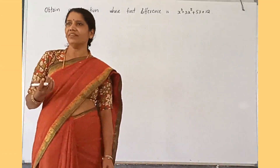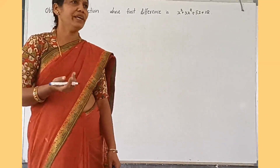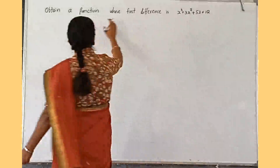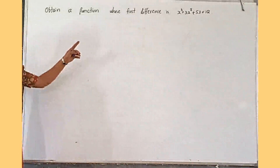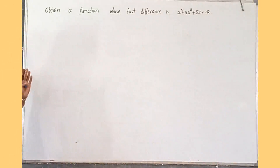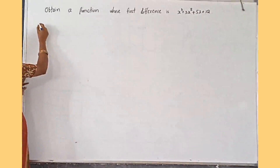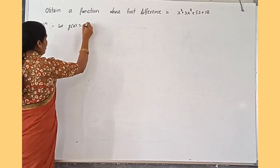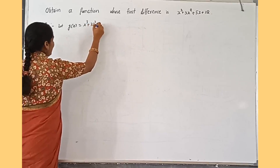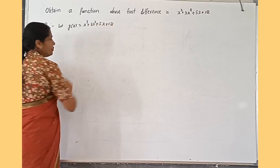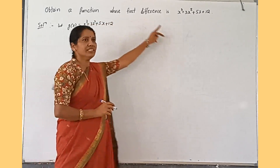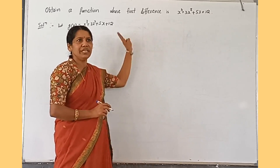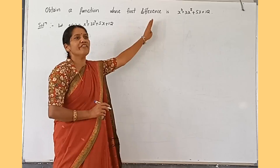Dear students, now we will look at a problem based on numerical methods, which is a 5-mark portion. That is, obtain a function whose first difference is x³ + 3x² + 5x + 1. Now let me take this function as g(x). Let g(x) = x³ + 3x² + 5x + 1. This is the first difference of some function; let us take that function as f(x). So g(x) is the first difference of f(x).